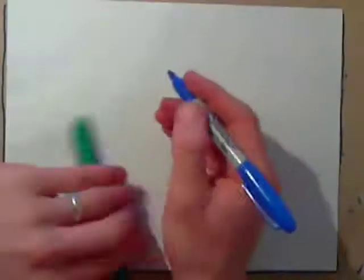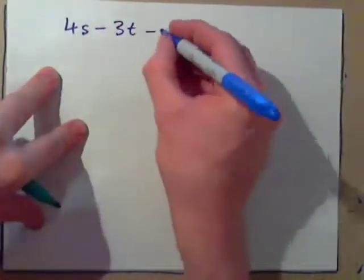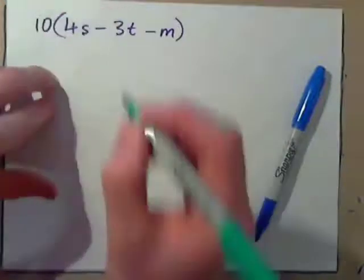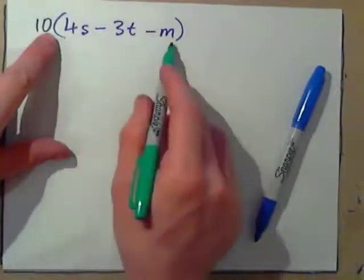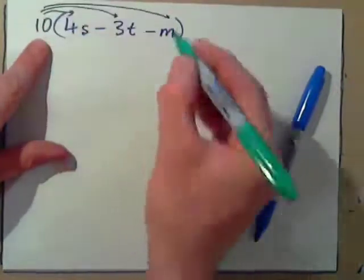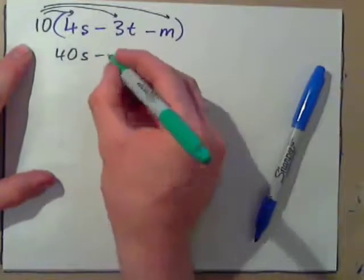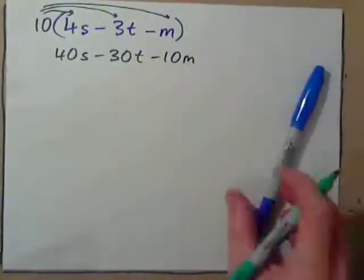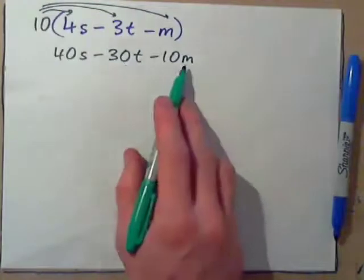So do this one. You're working as a stock trader: increase Shell stock by 4, decrease Texaco stock by 3, and decrease Microsoft stock by 1. What if you do this for 10 clients? A number in front of parentheses means multiply everything inside by that number: 10 times 4S is 40S, 10 times negative 3T is negative 30T, 10 times negative M is negative 10M. So you increase Shell by 40, decrease Texaco by 30, decrease Microsoft by 10.